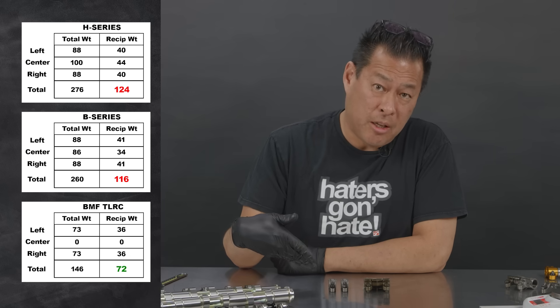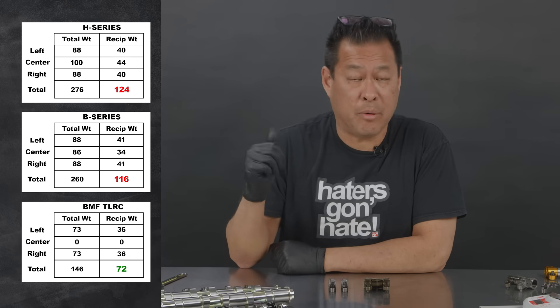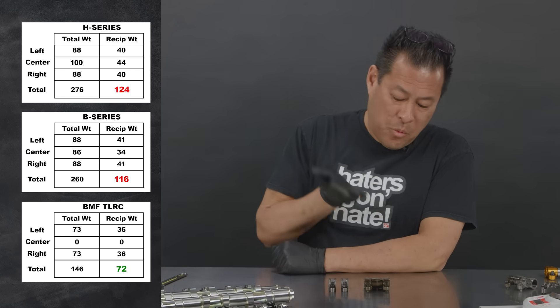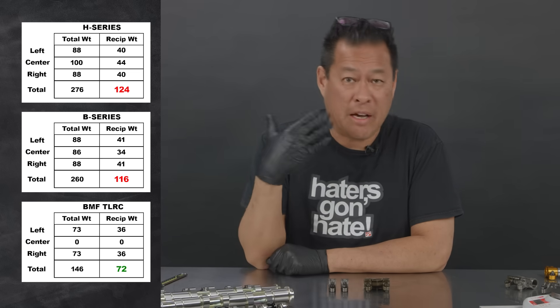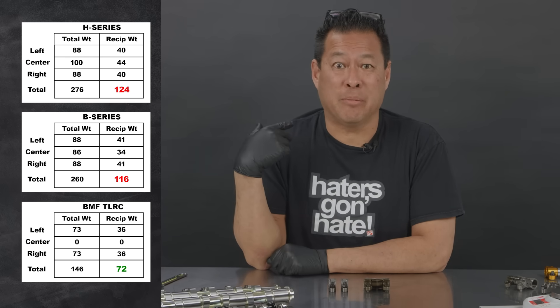With the BMF TLRC rockers you have approximately 70 grams of reciprocating weight. With the H rocker you have about 120 grams of reciprocating weight.